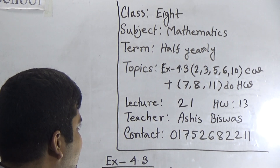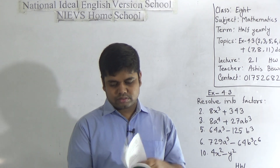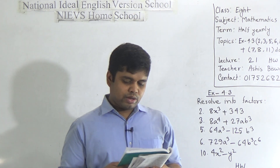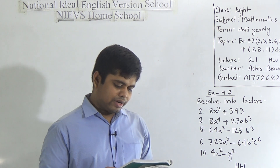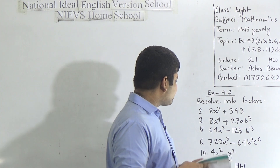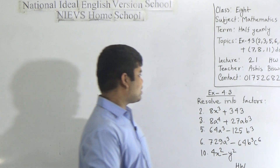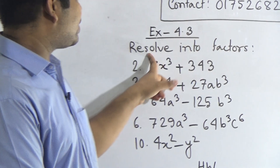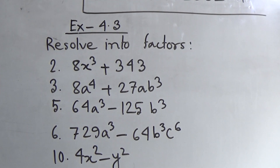Let us start our class. Open your math book to page number 69. From that chapter, we shall solve question numbers 2, 3, 5, 6, and 10, which we have already written on the board. We are solving exercise 4.3 — resolve into factors. That means some expressions are given and we need to resolve them into factors.